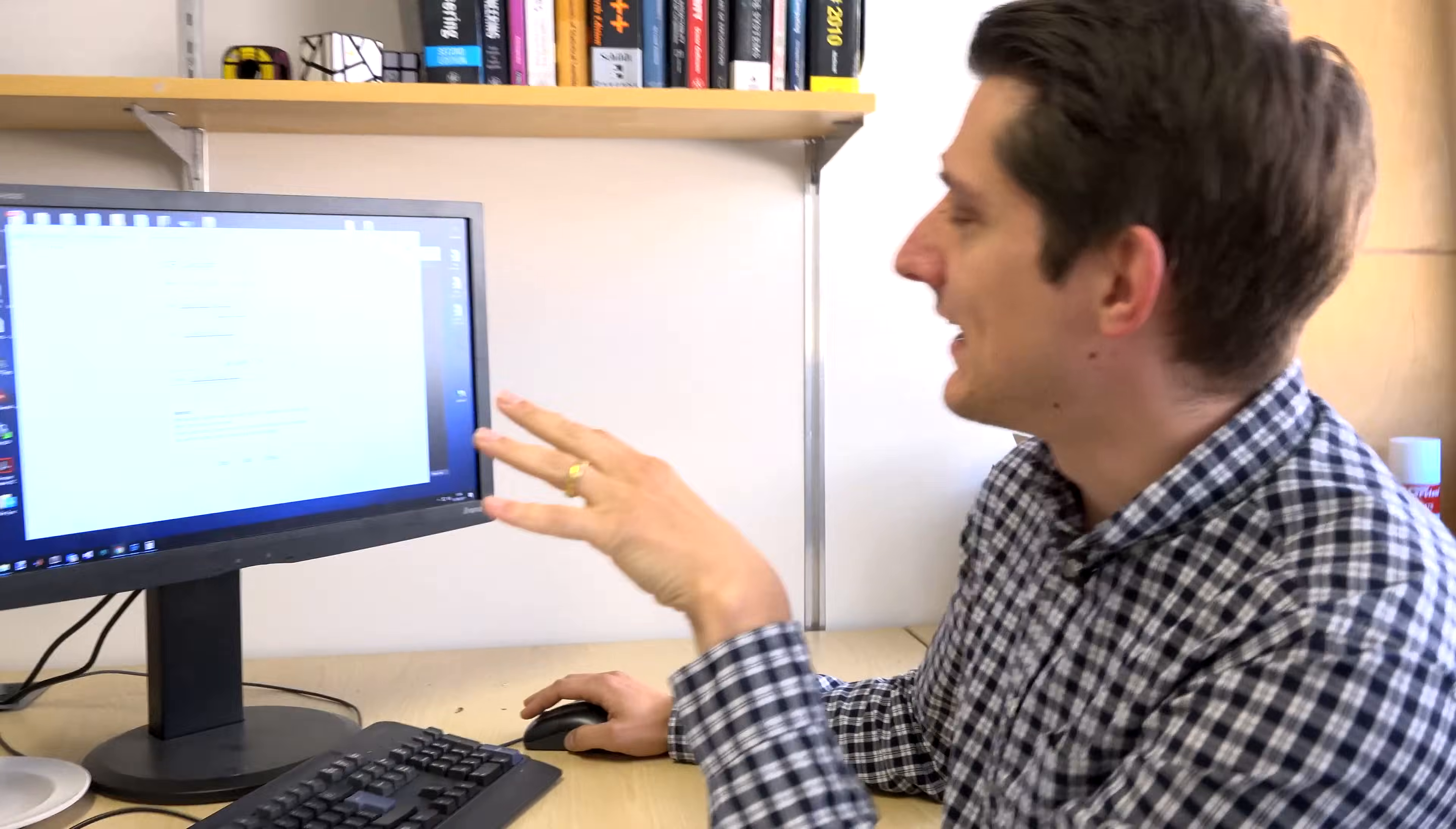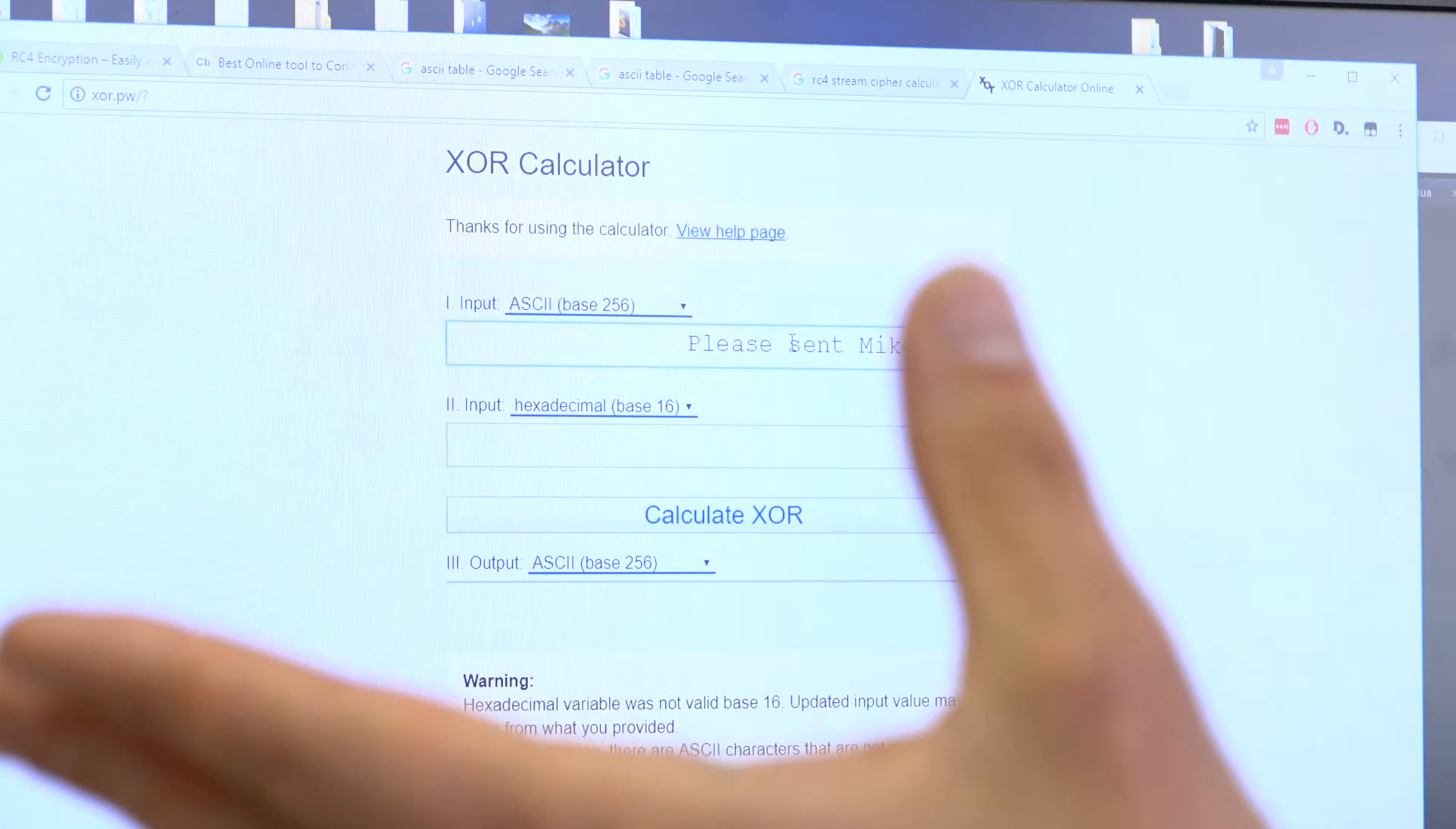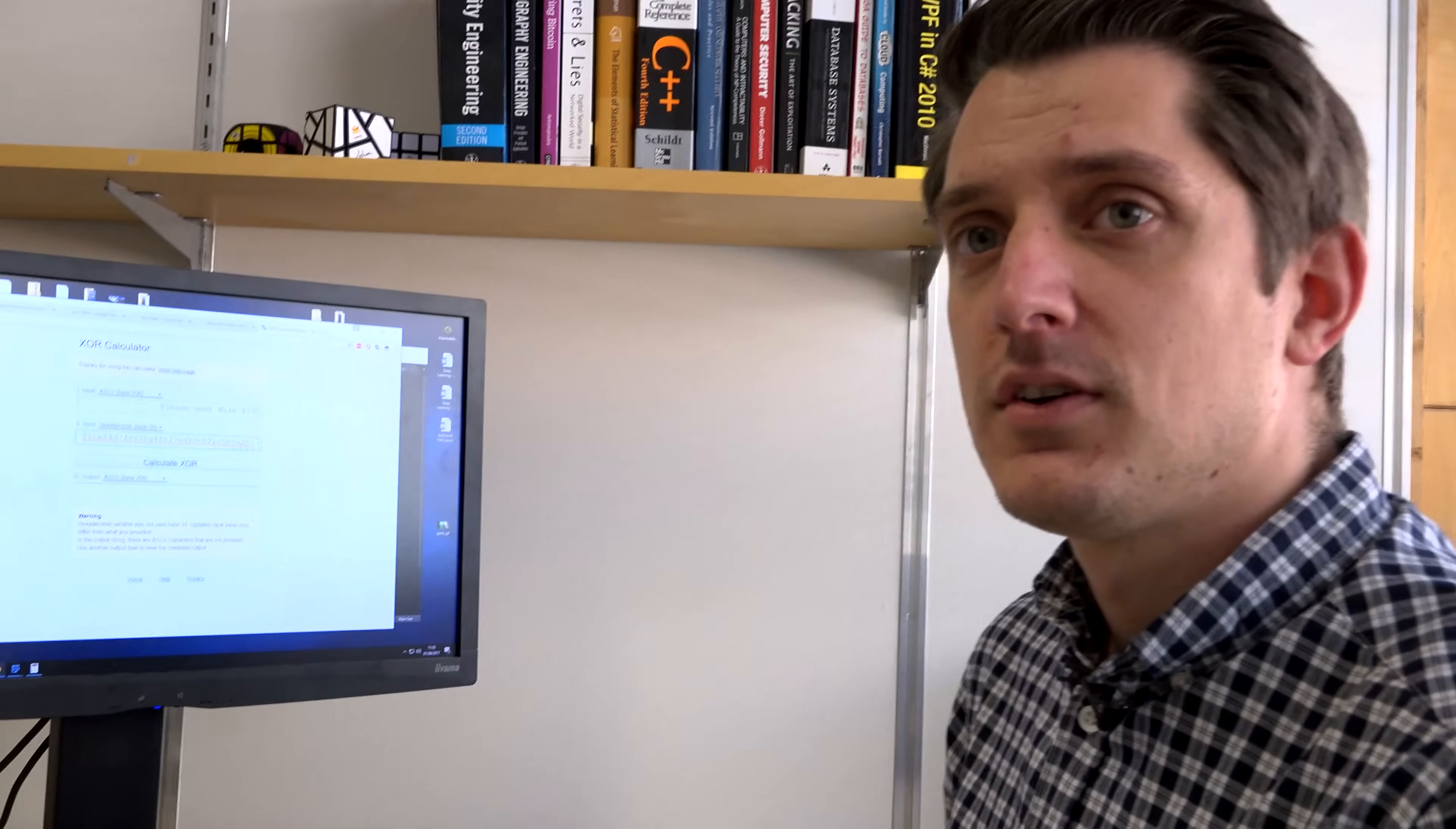So I've got here an XOR calculator that I found. I'm going to put in a message: 'please send Mike £100.' This is just a calculator, it doesn't actually perform keystream generation. So I've got a keystream that I'm going to paste in here. This is my keystream which is just in hex.